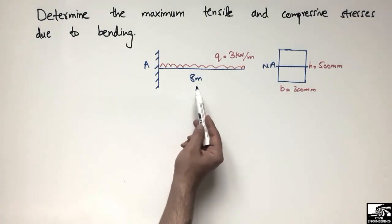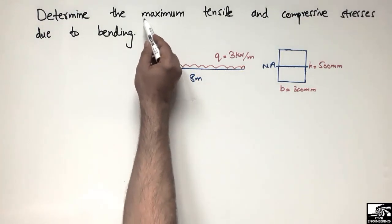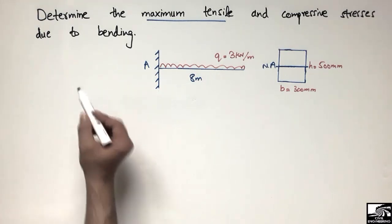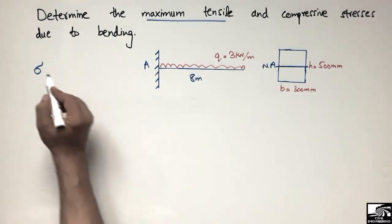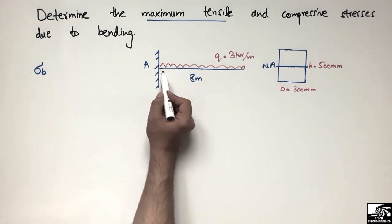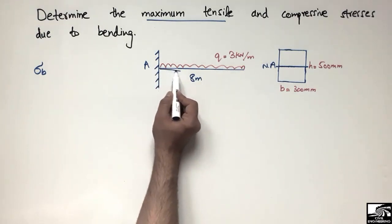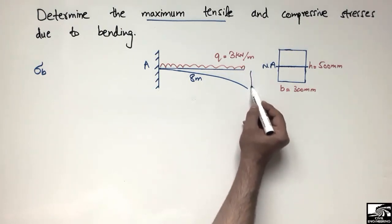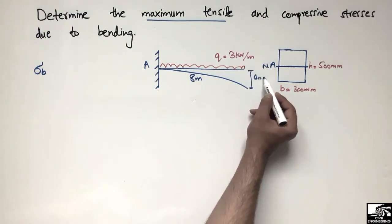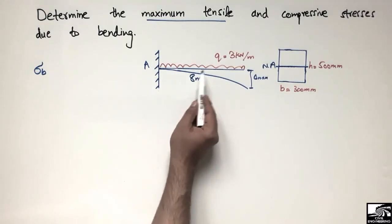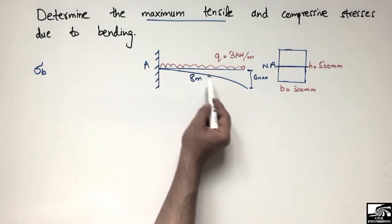We have to find the maximum tensile and compressive stresses in this beam. In a beam, bending stresses are produced because of the applied load. Due to this load the beam will show deflection — there will be no deflection at the fixed support, and maximum deflection at the free end. So due to this load we have deflection and bending stresses in the beam.